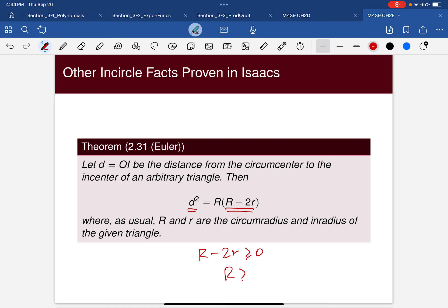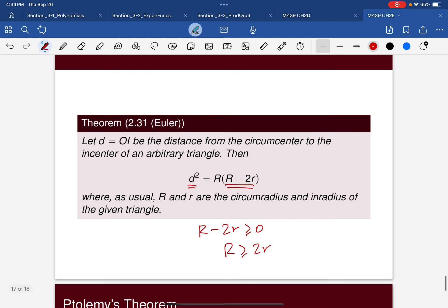And so what that means is that the thing on the right, R minus 2r, has to be greater than zero, which means that R is always greater than, well, it could be equal to, R is always greater than 2r, and it turns out that it will be R is equal to 2r when the triangle is equilateral.